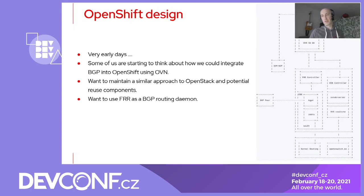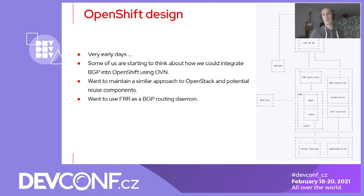The approach is very similar. We're potentially thinking about having some agent that would sit on the node, listening to the OVN databases — probably the southbound database — for any change in the OVN configuration, and then using that to reflect those changes onto the FRR daemon, which can potentially publish those changes out. Also vice versa: if a change has been made to FRR, we can then use that to make some configuration change to OVN as well.